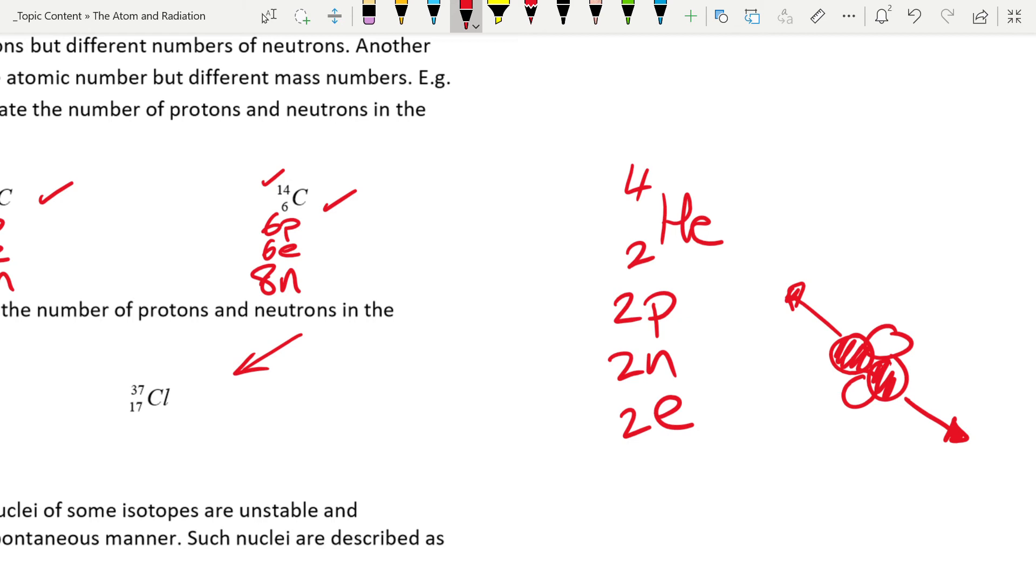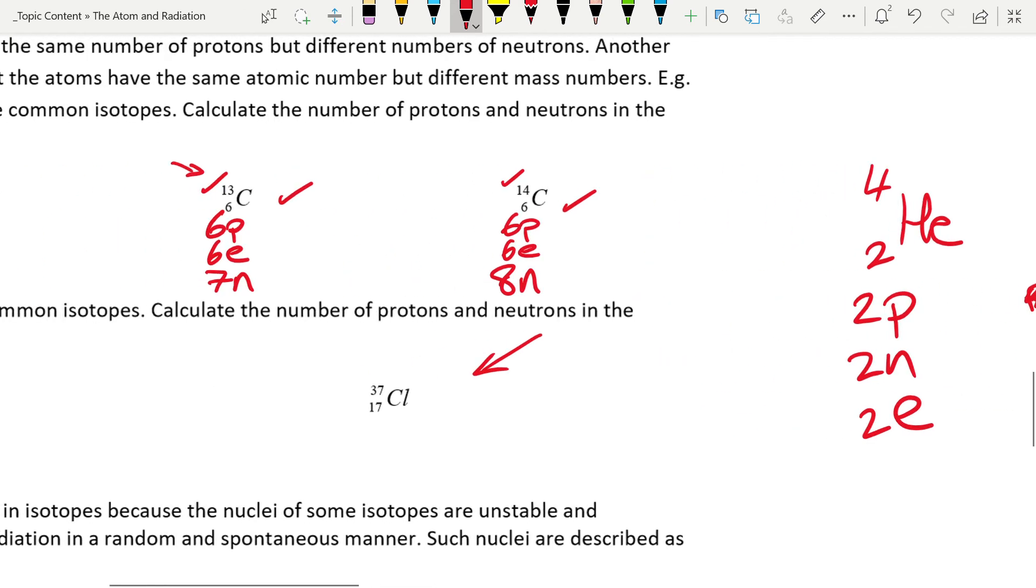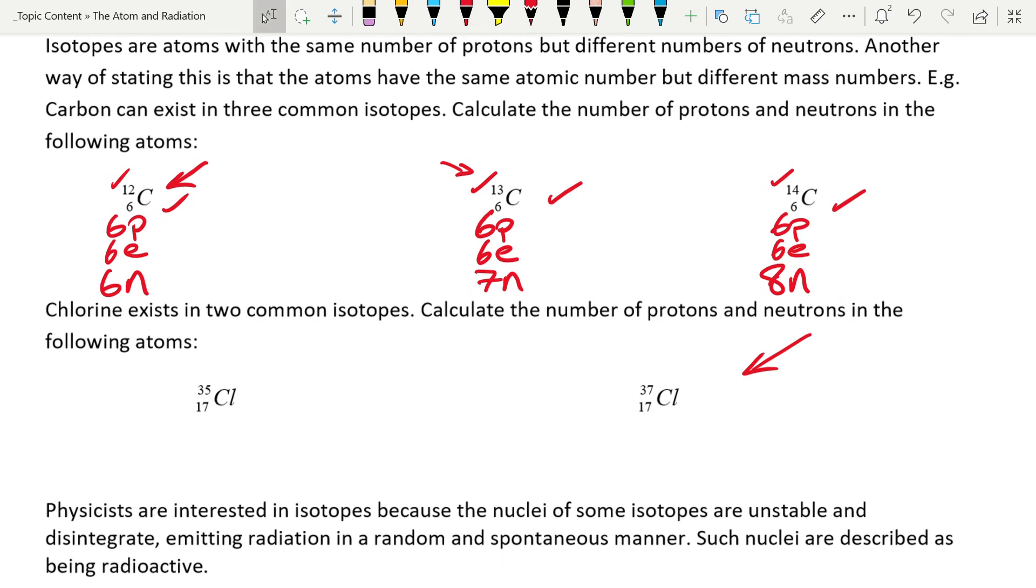If there are too few neutrons, the nucleus won't be stable. If there are too many, it won't be stable. You need just the right amount. So the reason we're interested in isotopes in physics is some of them are stable and some of them are not. If we look at our carbon, all carbon has an atomic number of six, so we don't really have to refer to that.